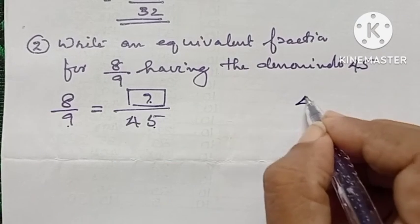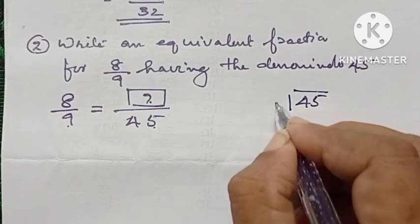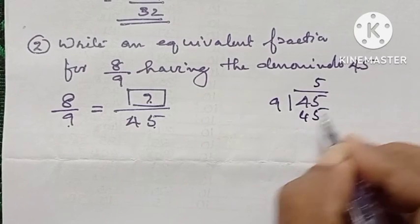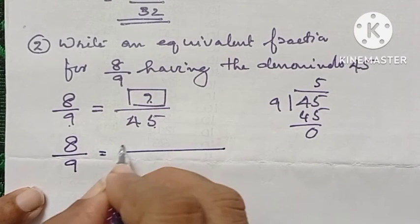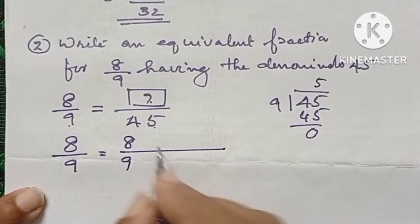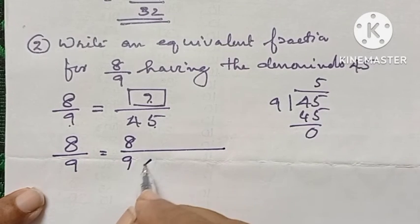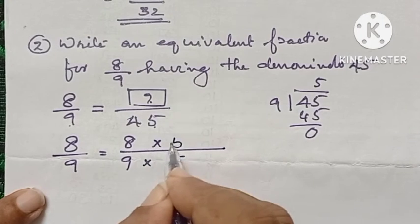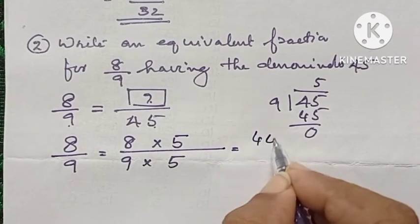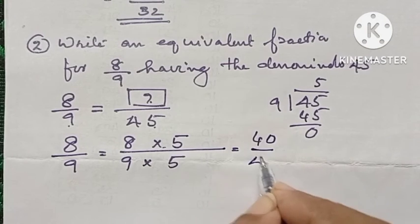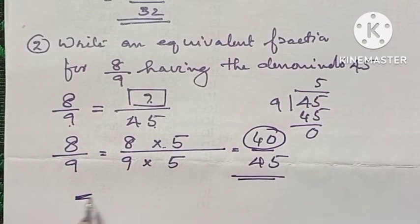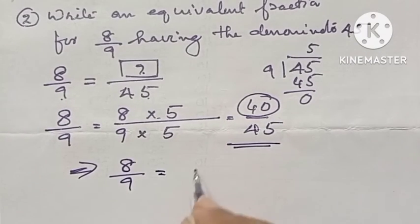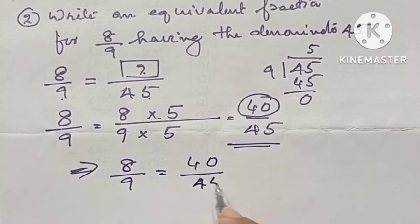45 divided by 9 gives us 5. Writing the same fraction 8 by 9, since 9 into 5 equals 45, we multiply both numerator and denominator by the same number 5. The answer is 40 divided by 45. Therefore, the numerator is 40, that is 8 by 9 equals 40 divided by 45.